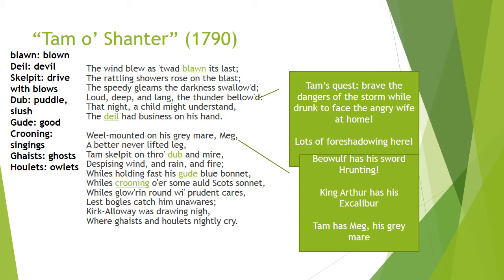There's lots of foreshadowing going on. Tam is on his gray mare, Meg. In most epics, the hero has some kind of tool with a name — Beowulf has his sword Hrunting, King Arthur has Excalibur. What does Tam have? He has Meg, his gray mare, and his old bonnet — his good blue bonnet, the little hat they wore in the 1700s.